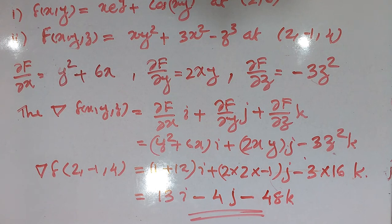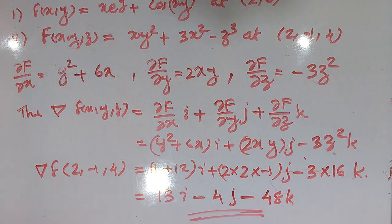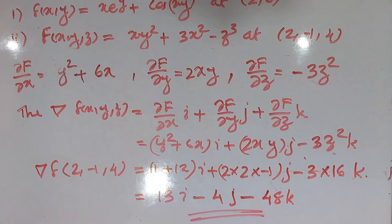Now we have del f at the point (2, minus 1, 4). We will next use the del operator to find the directional derivative and discuss further applications of the operator.